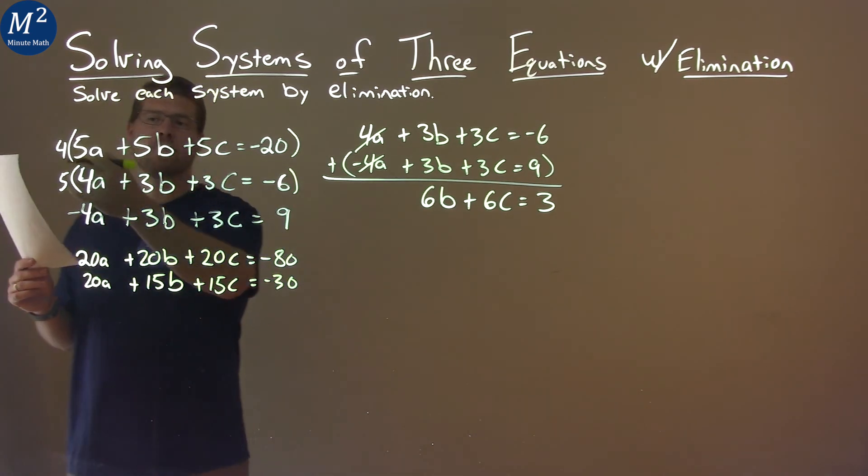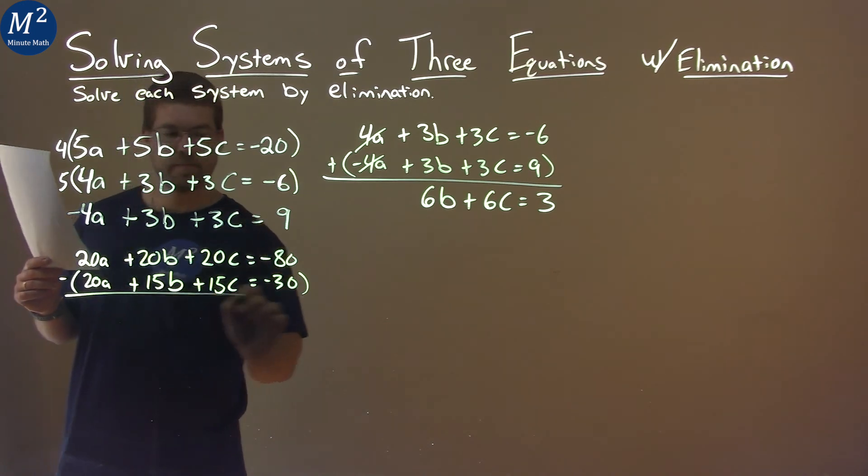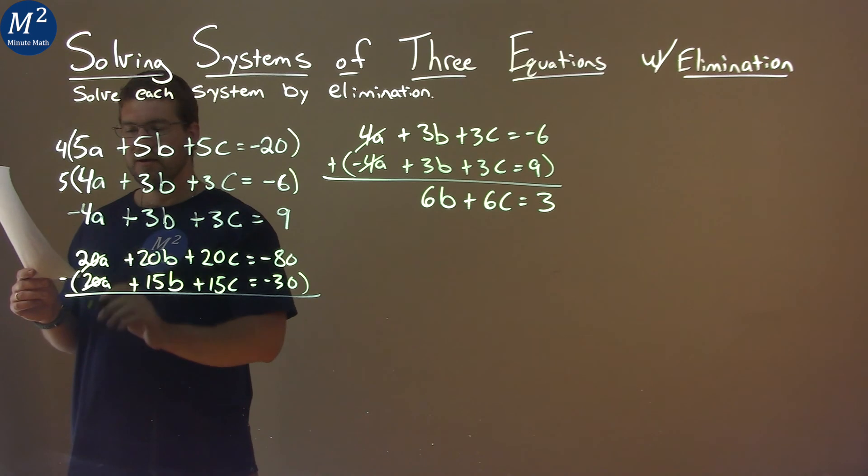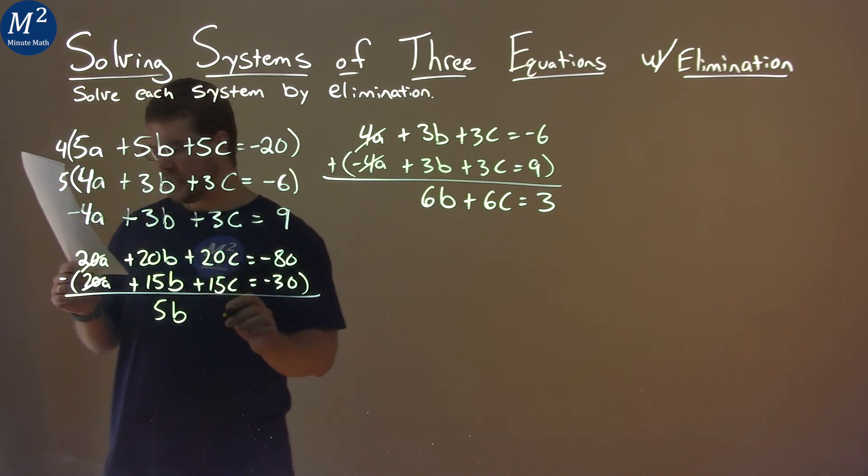And in doing so, I kind of set these things up where if I subtract the equations here, the variable a will get eliminated again. So 20a minus 20a gets us 0. 20b minus 15b is 5b. And then 20c minus 15c is, again, 5c.